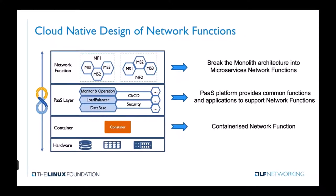So what kind of network functions can be called cloud-native? From the top of the picture, we should break the monolithic architecture of the network function into micro-services in order to make the network function more flexible. Then we refine common capabilities required by upper-layer services as platform functions. For the infrastructure layer, we use containers to deploy network functions. This is our goal to achieve cloud-native network functions.